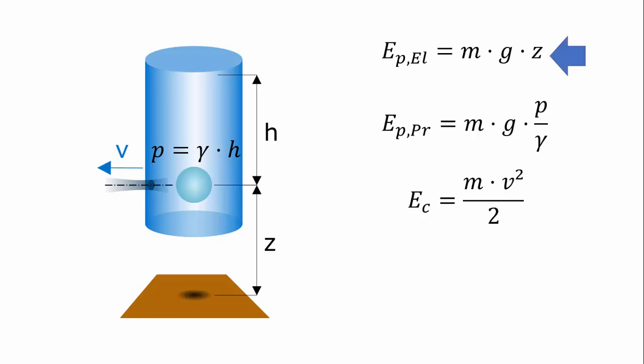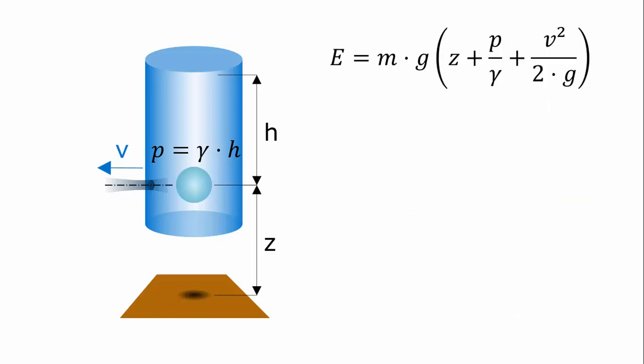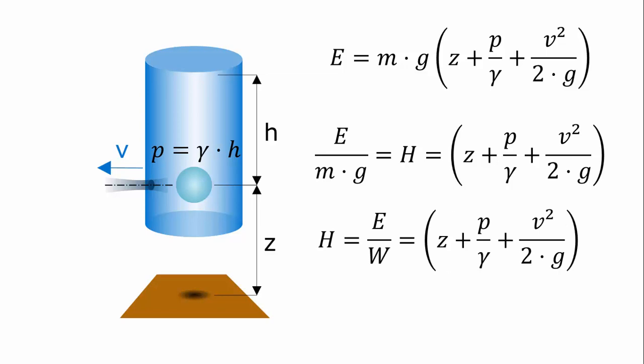Here are the three forms of energy that a water particle can have: the elevation potential energy, the pressure potential energy, and the kinetic energy. Here is the total energy. It's the sum of those three forms. Let's put it here, at the top of the page. Now, we divide all the terms by mg, which is the weight w. The energy divided by the weight is what we call a head.